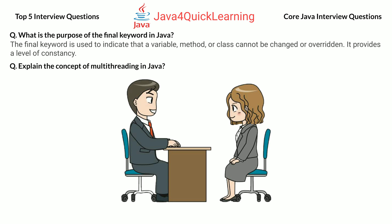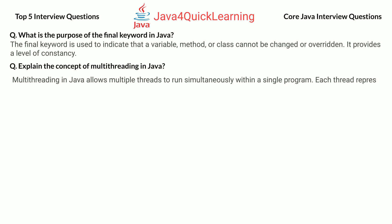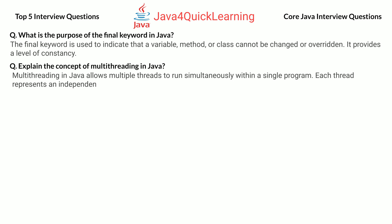Explain the concept of multi-threading in Java. Multi-threading in Java allows multiple threads to run simultaneously within a single program. Each thread represents an independent flow of execution.